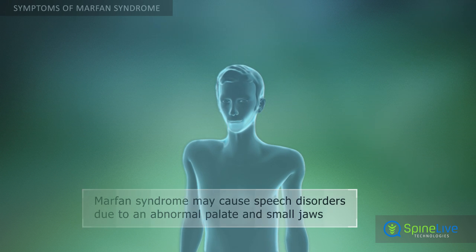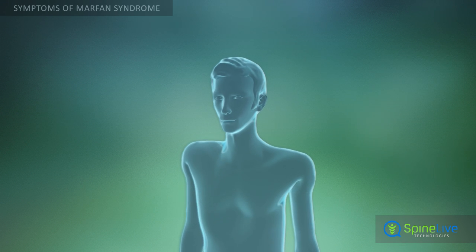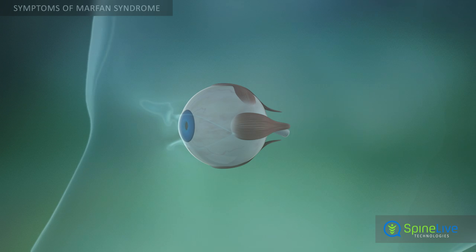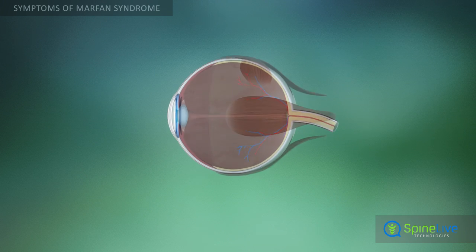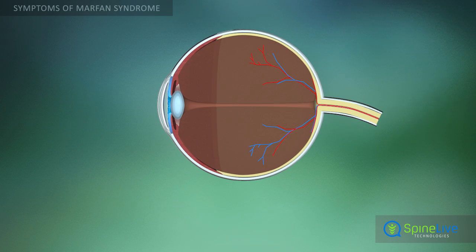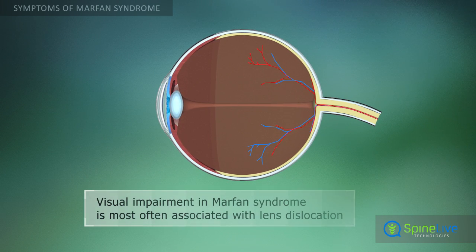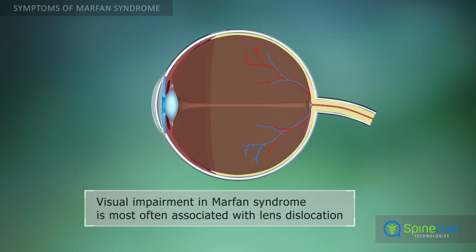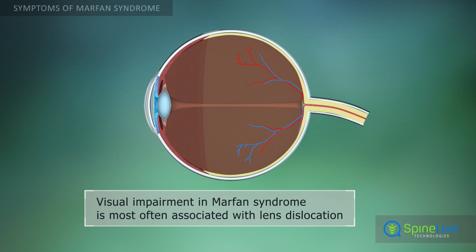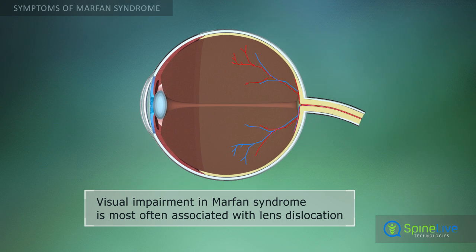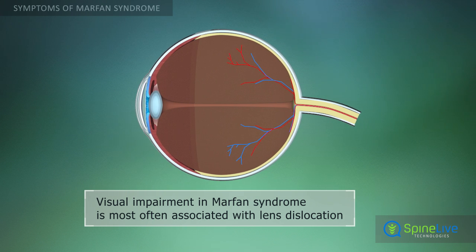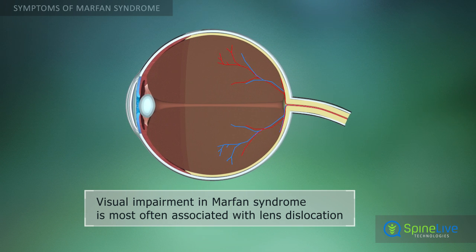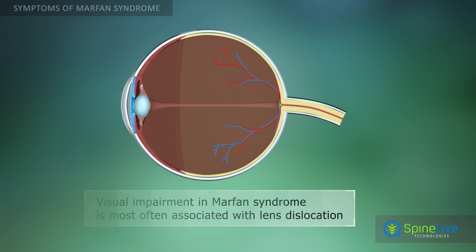Some people with Marfan syndrome have speech disorders resulting from symptomatic high palates and small jaws. Marfan syndrome can affect the eyes in various ways. The principal change in the eyes is partial lens dislocation due to changes in ciliary zonules, which hold the lens and are responsible for visual adaptation in near and far vision.